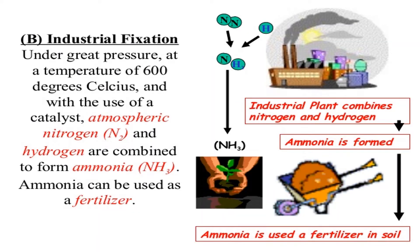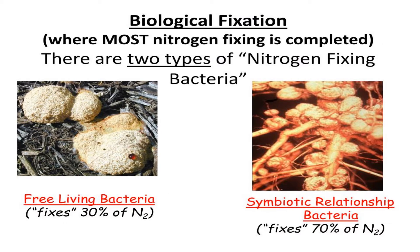Industrial fixation — also called chemical or synthetic fixation — happens under very high pressure, at a temperature of around 600 degrees Celsius, with the use of catalysts. Atmospheric nitrogen is combined with hydrogen and you get ammonia, which can later be used as a fertilizer.